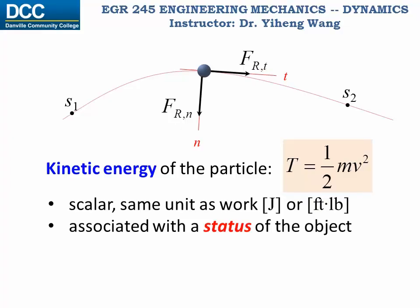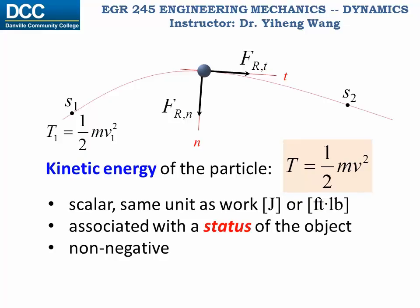Because kinetic energy equals one-half mv squared, the mass m must be non-zero and velocity squared must be non-negative; therefore kinetic energy is always non-negative. At state one, the kinetic energy of the particle is one-half mv₁ squared, and at state two, the kinetic energy is one-half mv₂ squared. Therefore, the principle of work and energy states that the total work done to this particle by all external forces during process one to two equals T₂, the kinetic energy at state two, minus T₁, the kinetic energy at state one.